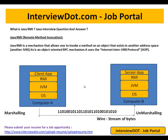Java RMI is a mechanism that allows one to invoke a method on an object that exists in another address space — that means another JVM — from one JVM to another JVM.